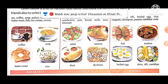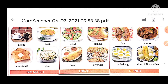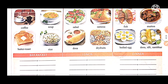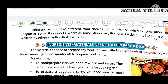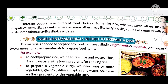For lunch, items like salad, paratha, samosa, dosa, dhokla, sandwich, jam bread, milk, and nuts. For dinner, we may have fish, mutton, idli, boiled egg, rice, chapati, chickpeas, paneer, and sambar. Different people have different food choices.